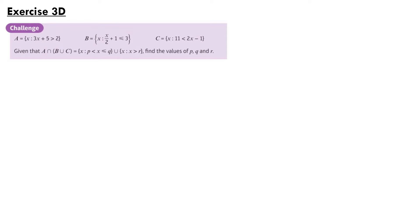This question from Exercise 3d: we're told that A is where 3x plus 5 is greater than 2; B is where x over 2 plus 1 is less than or equal to 3; and C is where 11 is less than 2x minus 1. Given that A intersection B union C is where p is less than x which is less than or equal to q, union x is greater than r, find the values of p, q, and r.